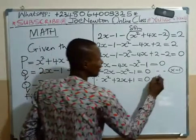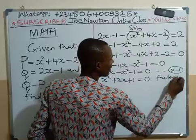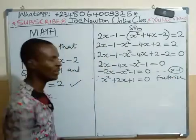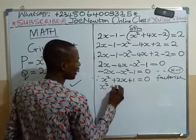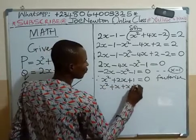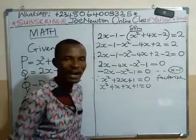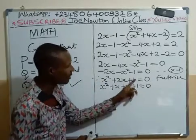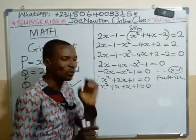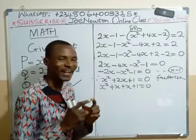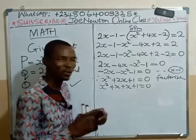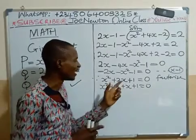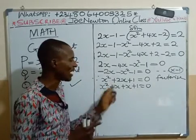So at this point now we factorize. Factorizing this, we have x squared plus x plus x plus 1 is equal to 0. x squared times 1 gives you x squared. We now look for two factors that when you multiply them you get x squared, and when you add them you get 2x, the middle term. And that is x and x.